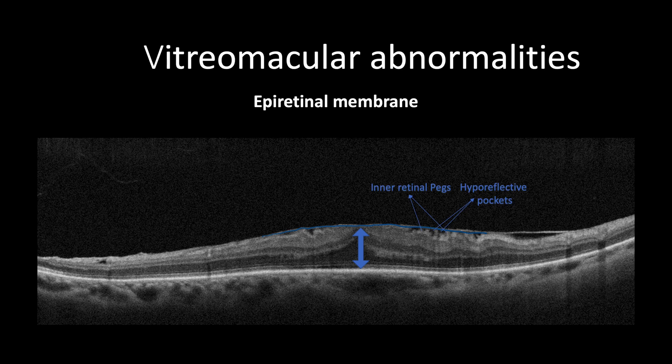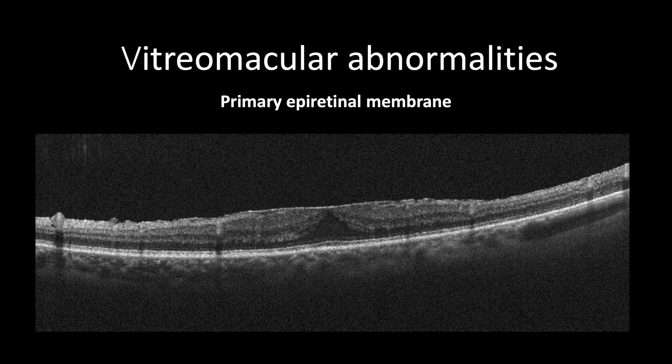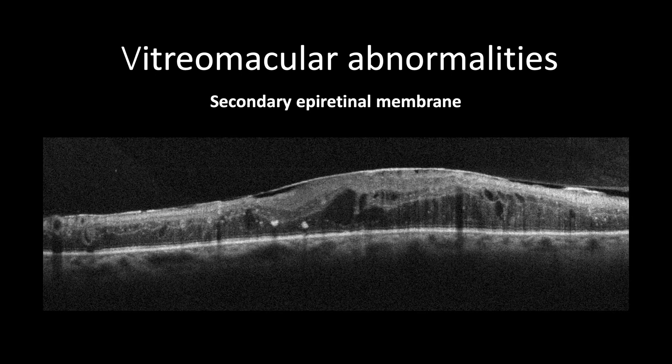The epiretinal membrane may cause increased retinal thickness and elevation of the foveal pit. It may induce folds of inner retinal tissue with or without intraretinal cystic formation or subretinal fluids. In cases where the epiretinal membrane is primary, the attachment will be broad, while in cases of secondary epiretinal membrane, the attachment will be multifocal.